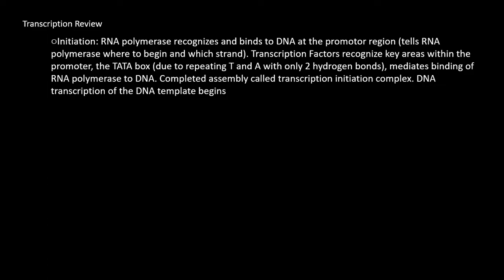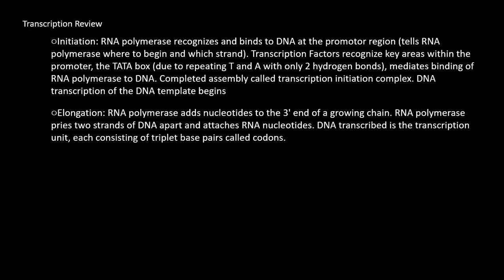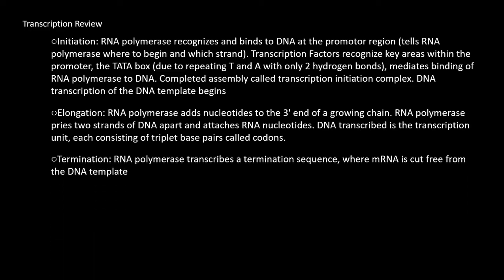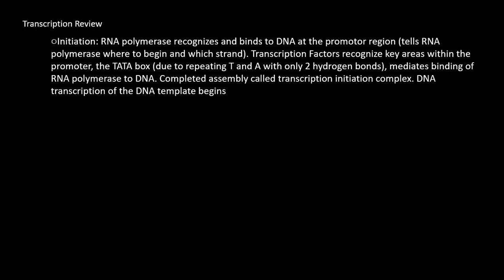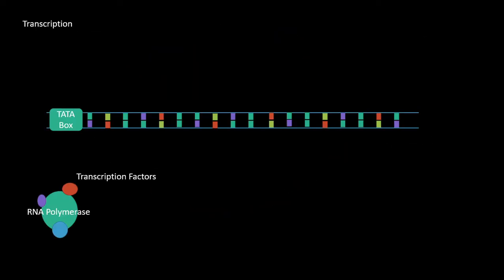Next, in elongation, the RNA polymerase adds nucleotides at the 3 prime end of the growing chain. RNA polymerase pries two strands of DNA apart and attaches the RNA nucleotides. The DNA transcribed is a transcription unit, each consisting of a triplet base pairs called codons. Last is termination, and this is when RNA polymerase transcribes the termination sequence of codons where mRNA is cut free from the DNA template. Okay, that was a lot of words.